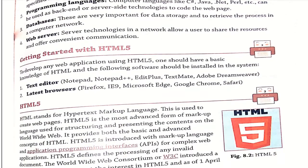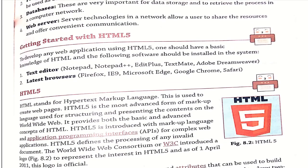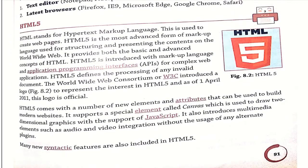Now, the next part is how to get started with HTML5. Basically, HTML5 is a Hypertext Markup Language, version 5, which is used to develop web pages. To develop any web page using HTML5, one should have basic knowledge of HTML, and the following software should be installed: a text editor like Notepad, Notepad++, EditPlus, TextMate, Adobe Dreamweaver, or a browser like Firefox, Google Chrome, or Safari.